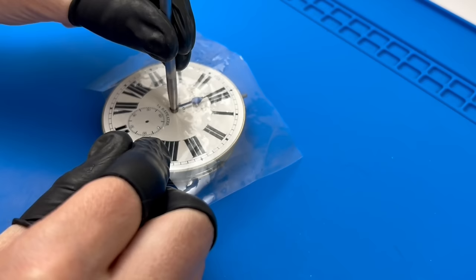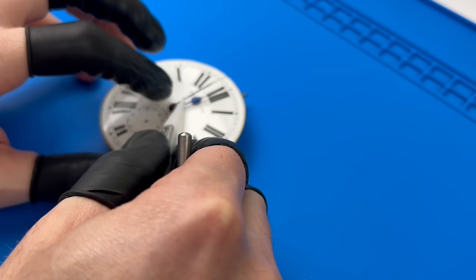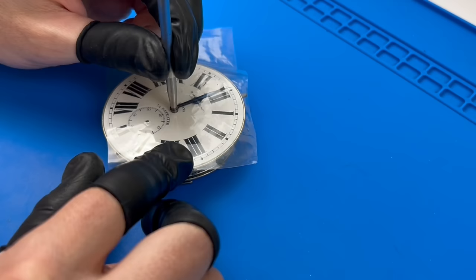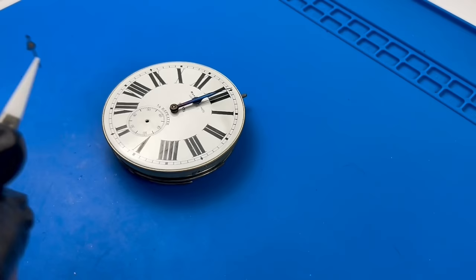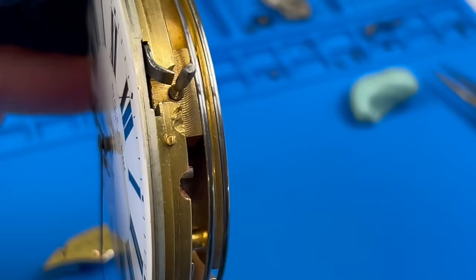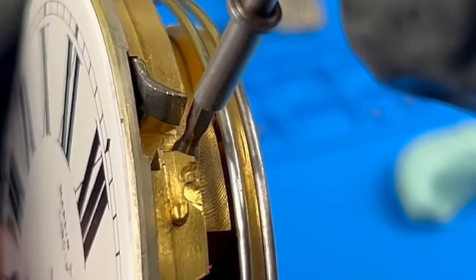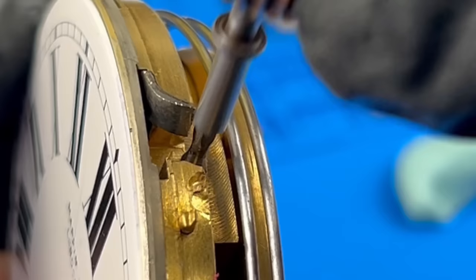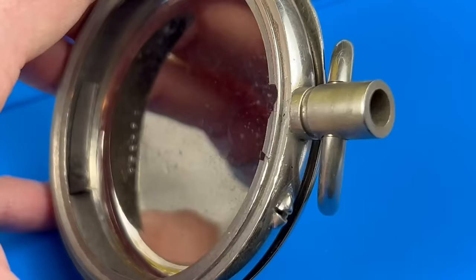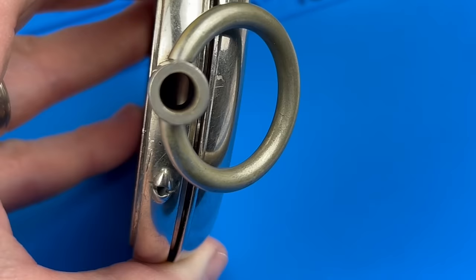Similar with calendar complications, the movement needs to be set to 12 before setting the hands, so they're synchronized with the repeater mechanism. The stem needs to be pressed to activate the repeater, but it seems to slip down behind the lever. I didn't see any sleeve within the neck of the case, so I have to assume some kind of piece is missing.